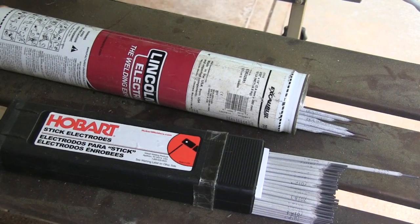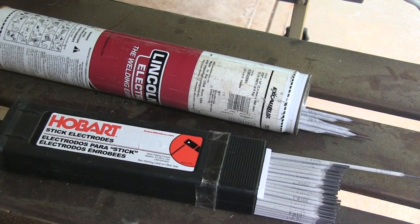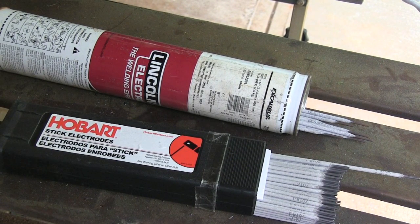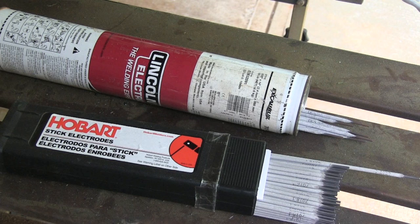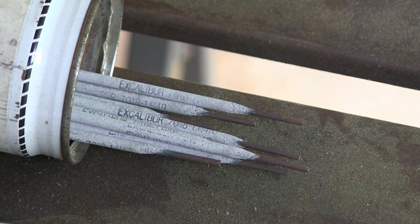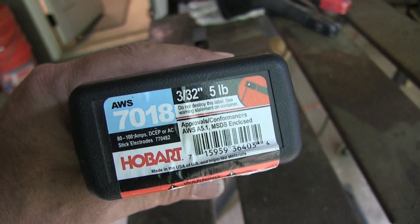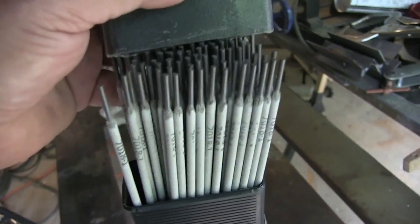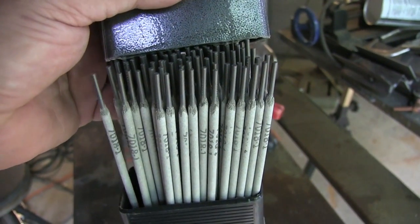What I started out to do was compare these two electrodes: some Hobart 3/32 7018 with some Lincoln Excalibur 7018. The Lincoln have been left outside, you can see there's a little rust on them. The Hobart have been kept in this little plastic case indoors, so they're in better shape.